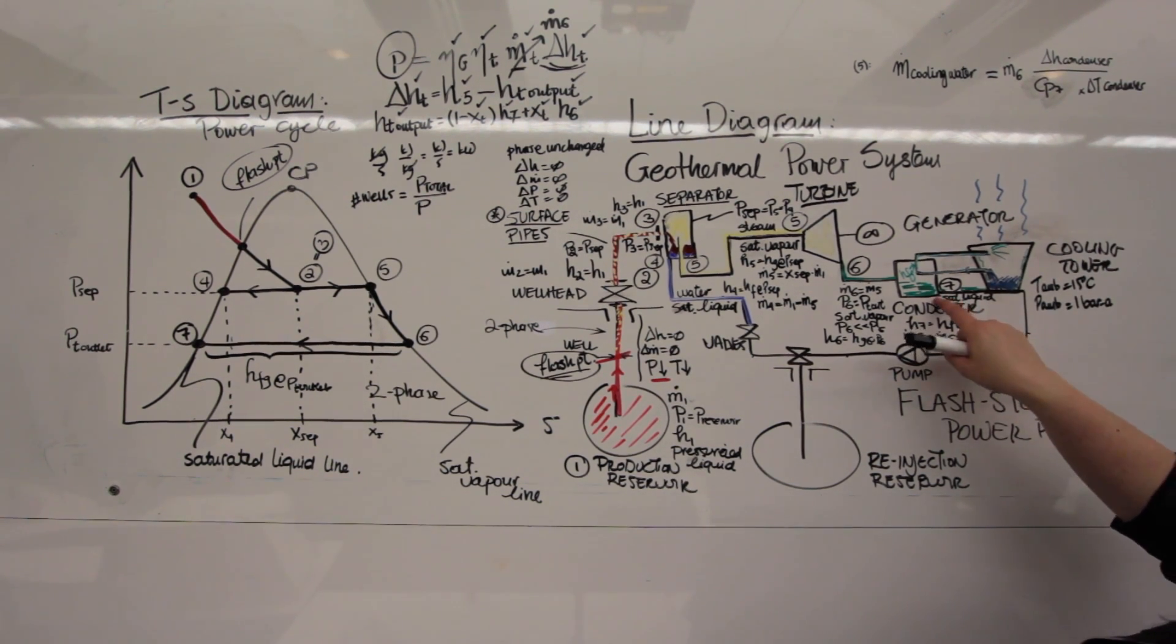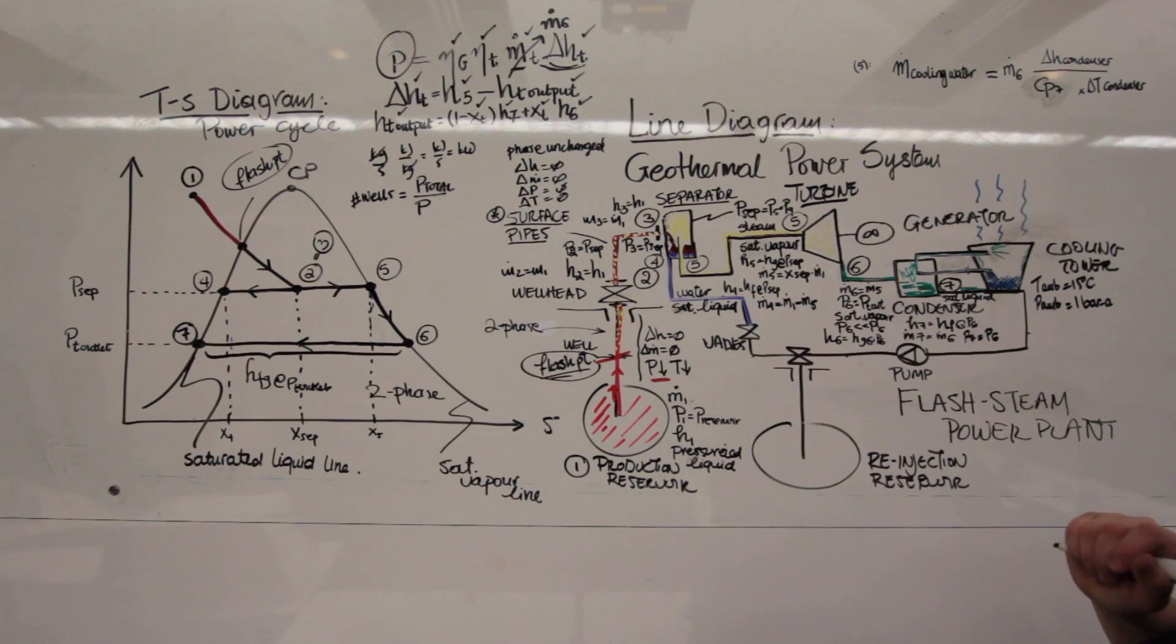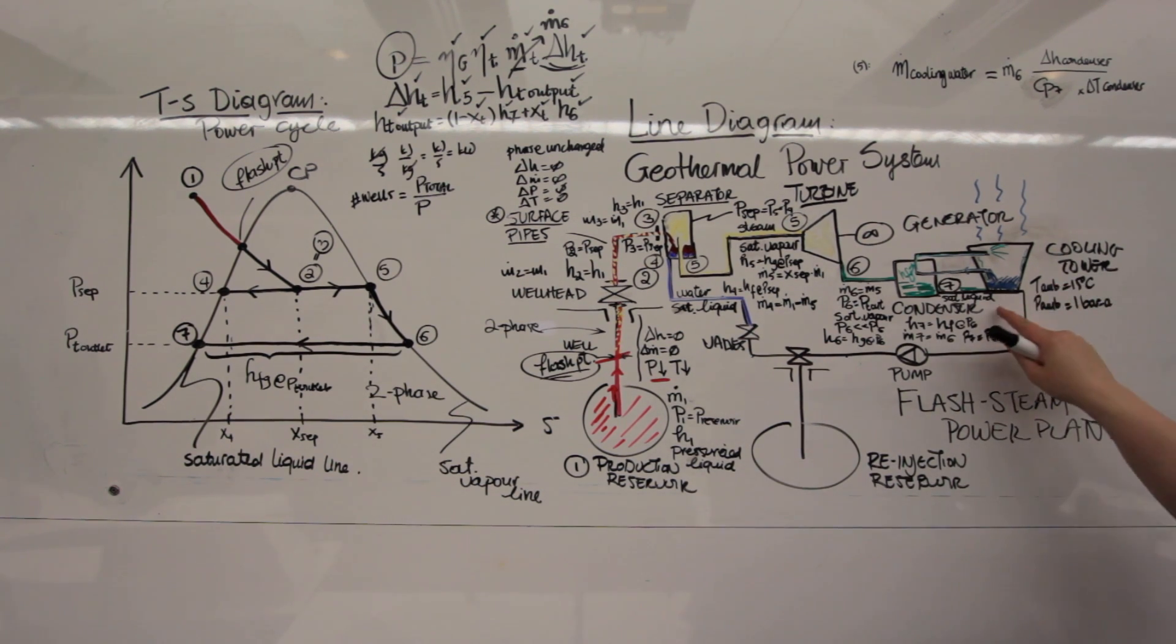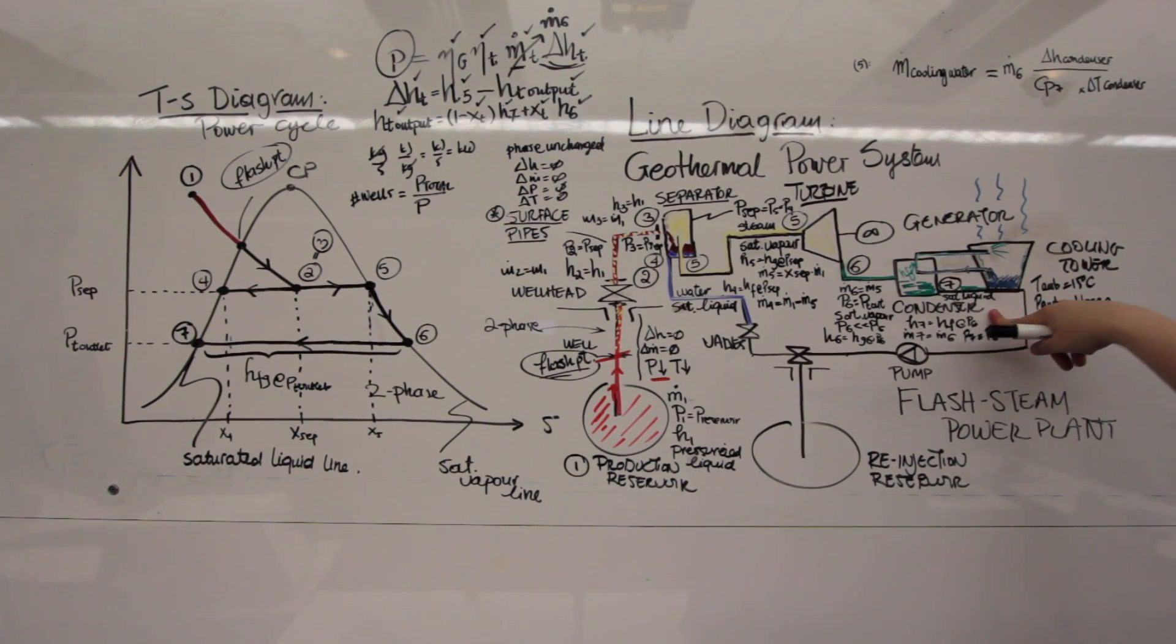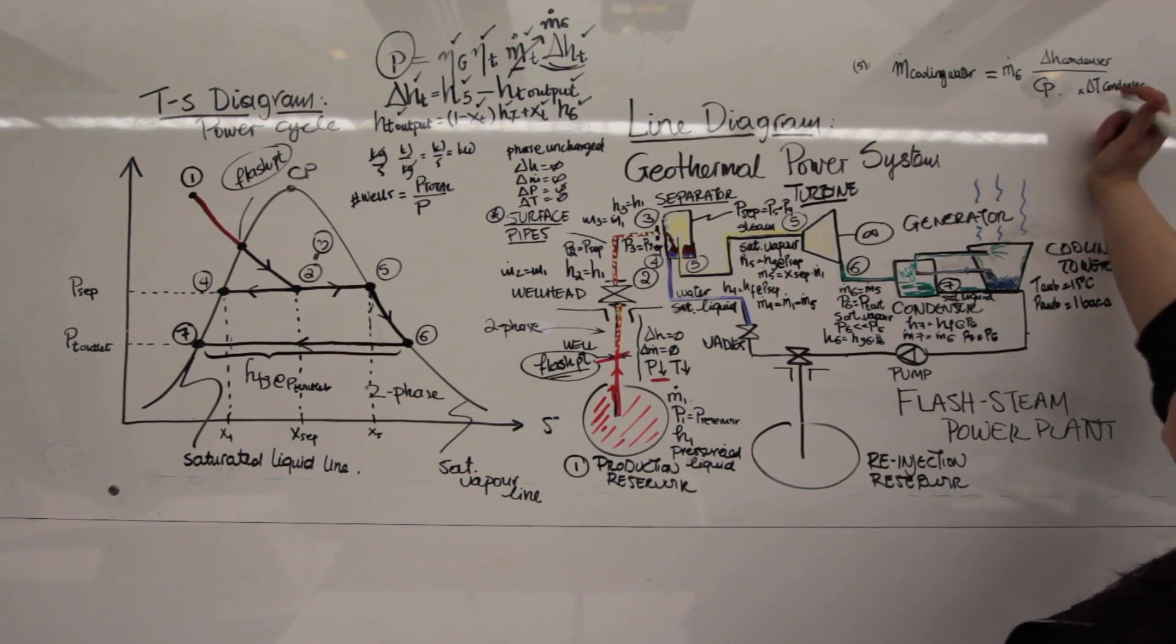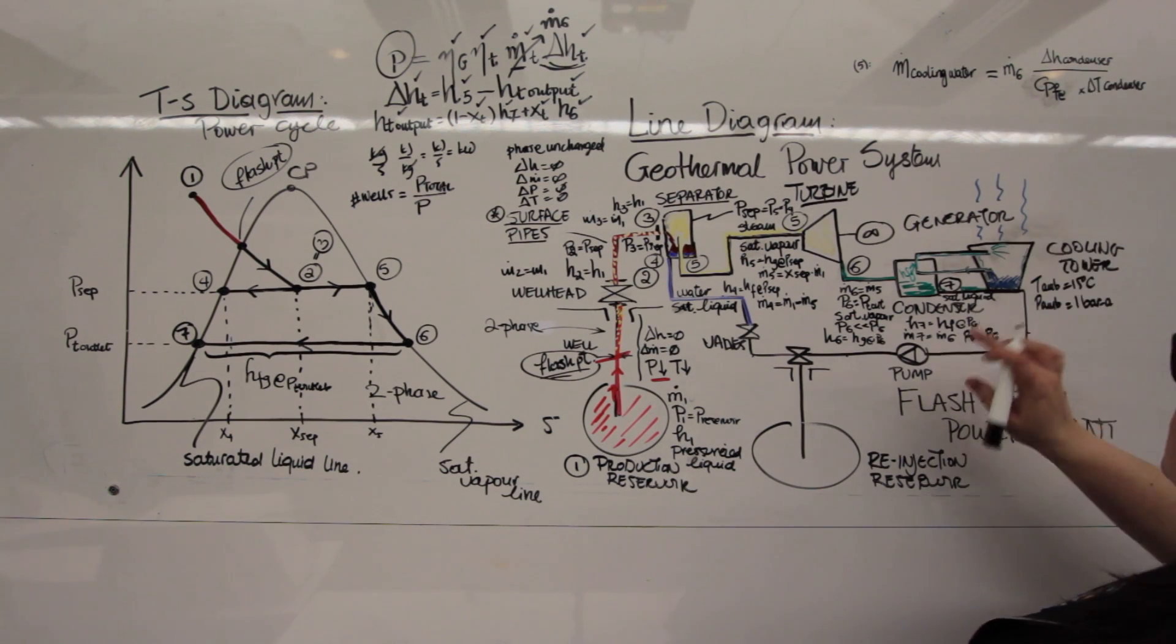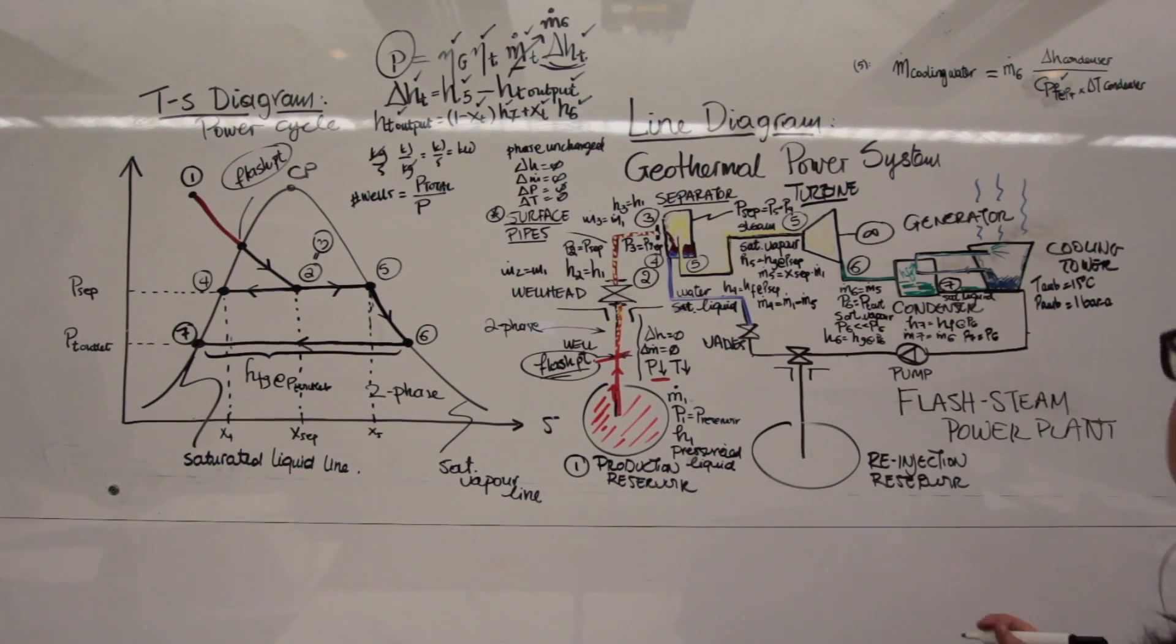What is my pressure at 7? Oh, I know it. It's actually the same as 6, the same at the outlet of the turbine. So this is known. We can use that. Do I also know my phase? Yes, I do. It's saturated liquid. All right. So instead of CP7, what I need to use is CPF at P7. And that is known.